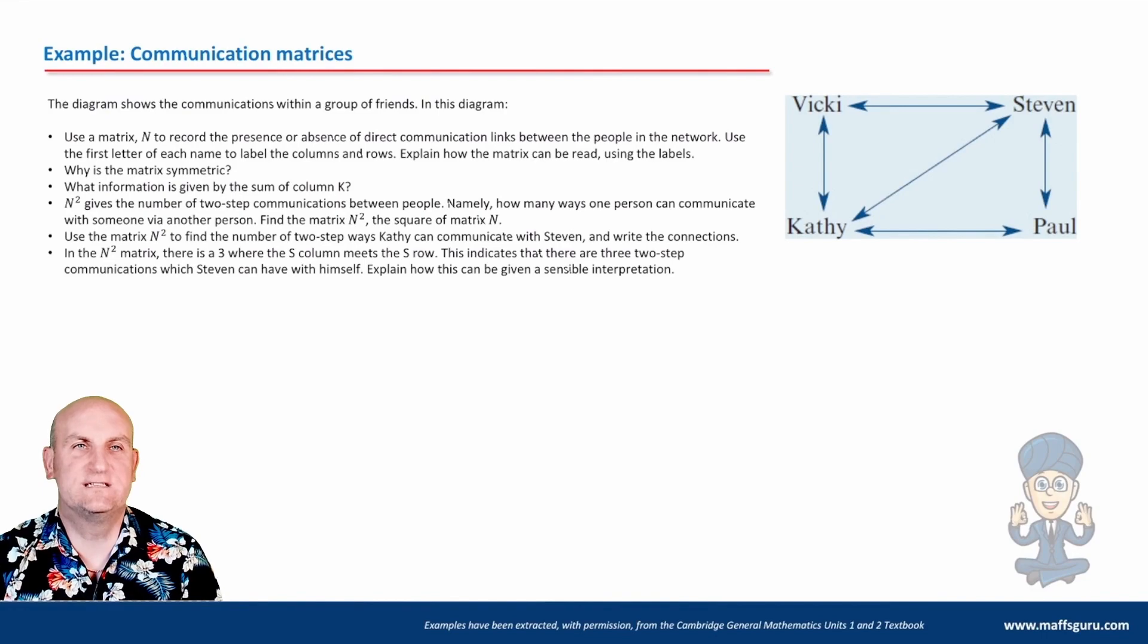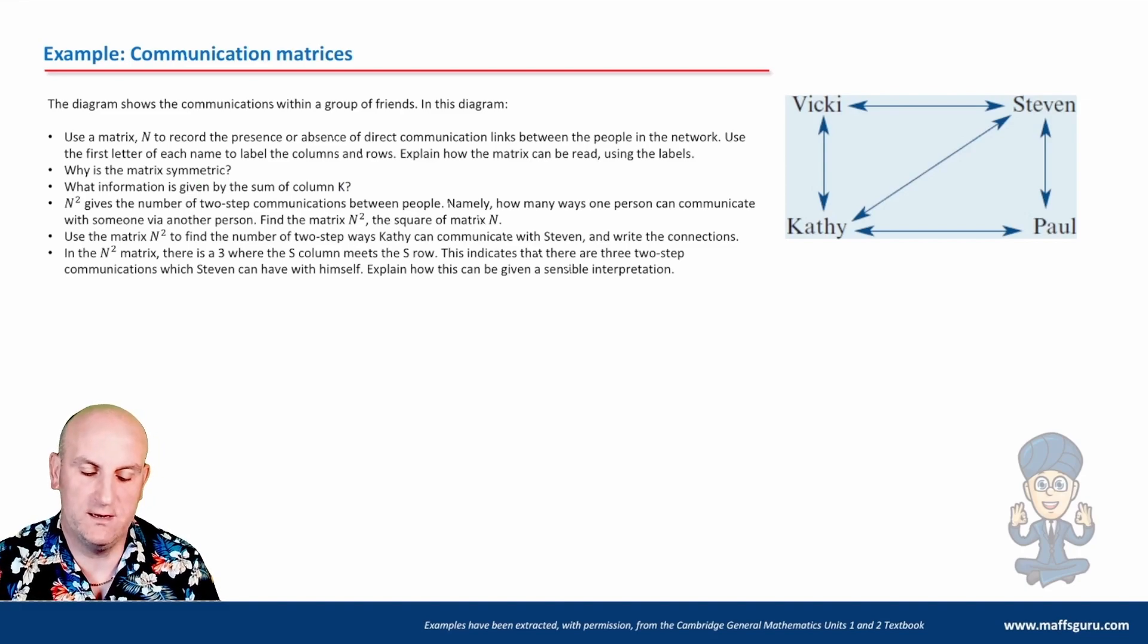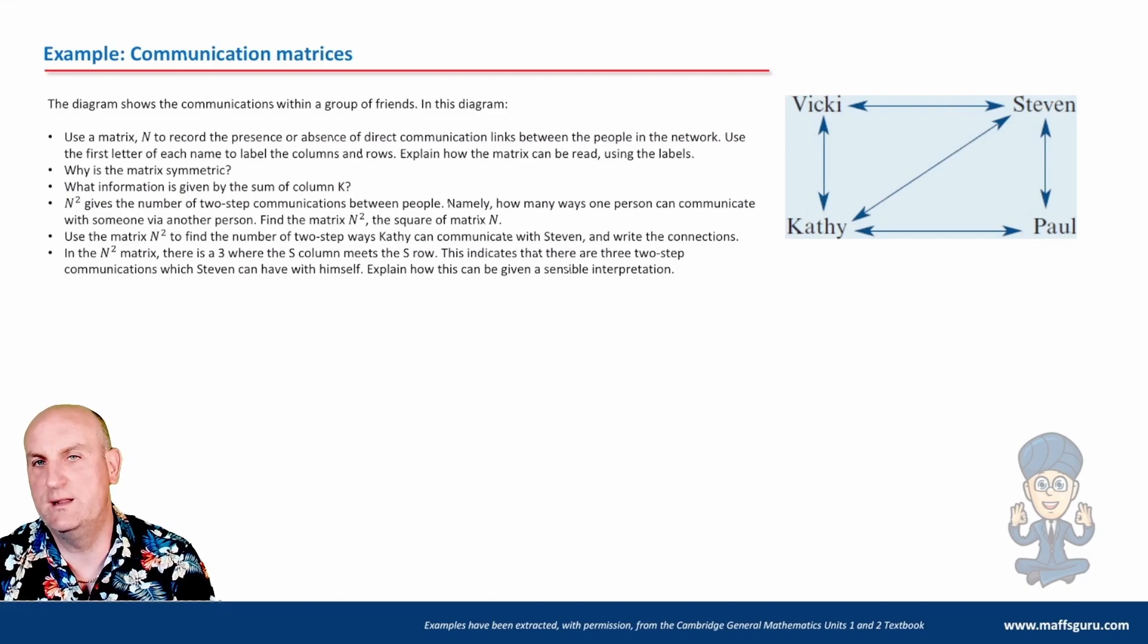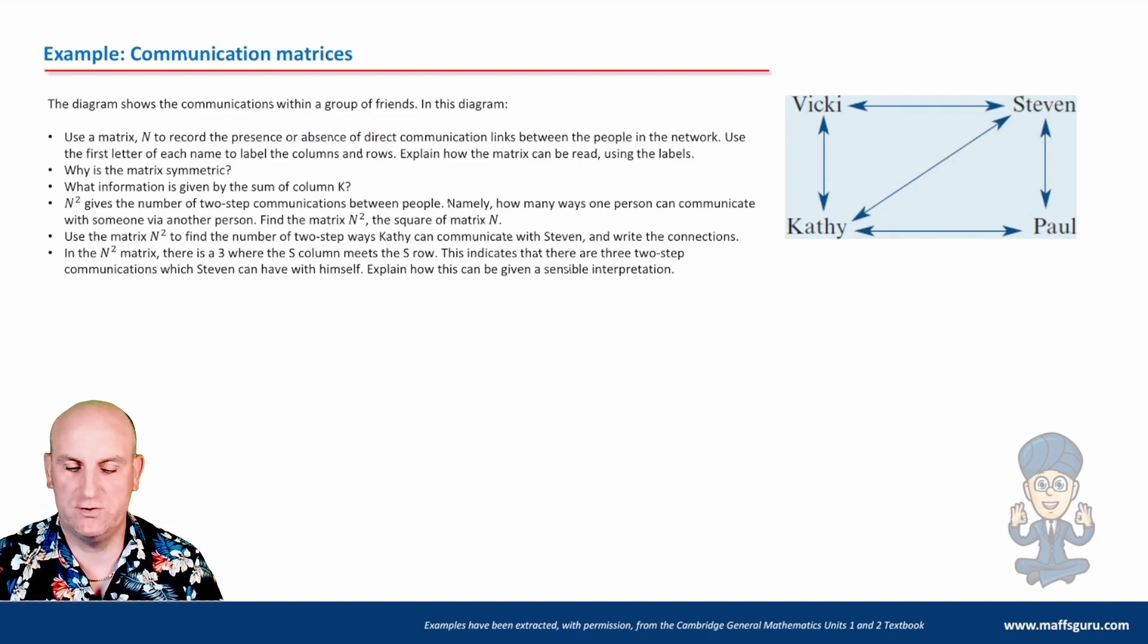Okay. So let's look at an example. The diagram shows the communication matrix with a group of friends in this diagram. Obviously, this is the one I've already been working through. So it should be nice and easy to do. Use a matrix N to record the presence or absence of direct communication links between the people in the network. Use the first letter of each name to label rows and columns. We've done this in the previous part of the video.